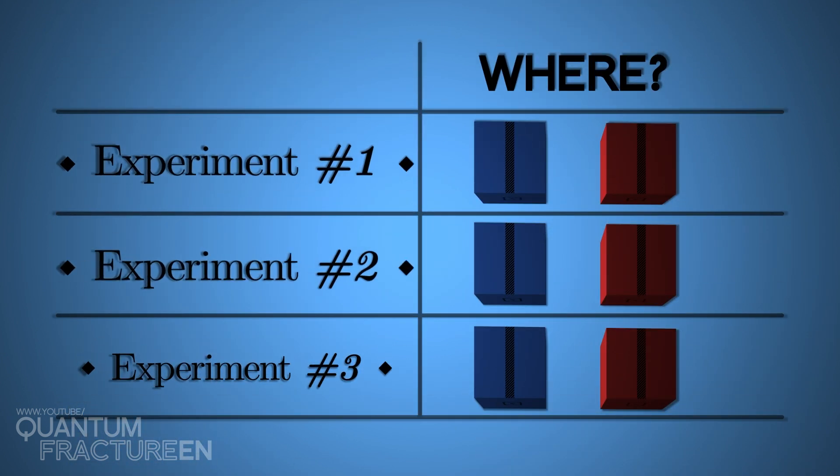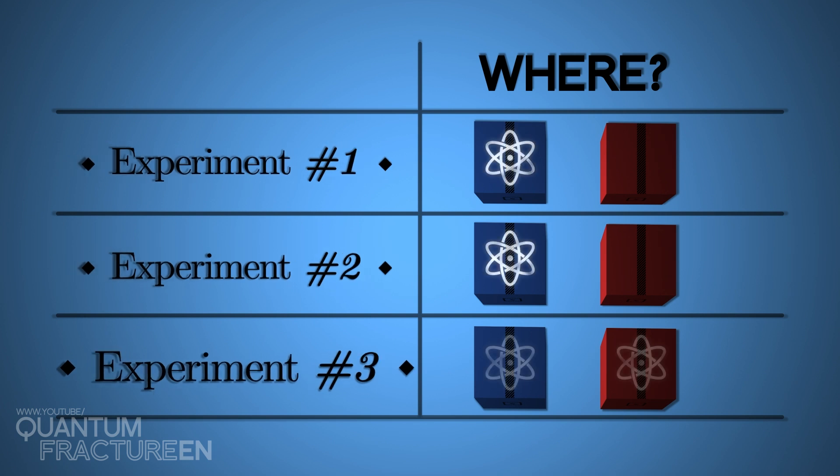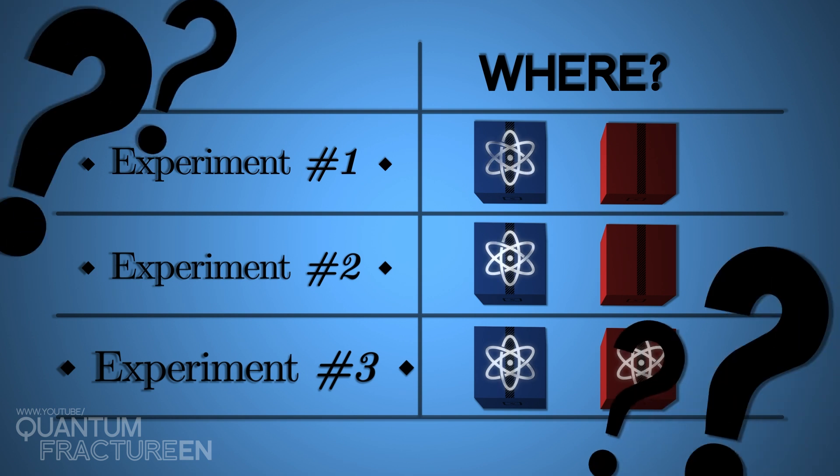A recap, doing experiments one and two seems to prove that the atom is inside just one box. But if I do number three, I have no choice but to accept that it's in both. Isn't this a contradiction?